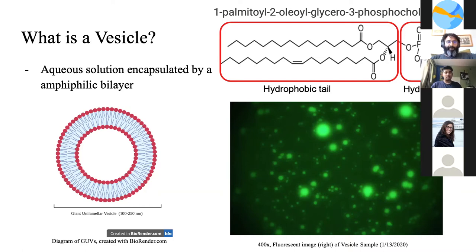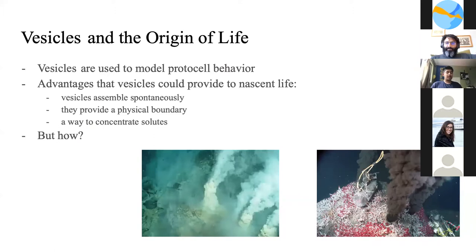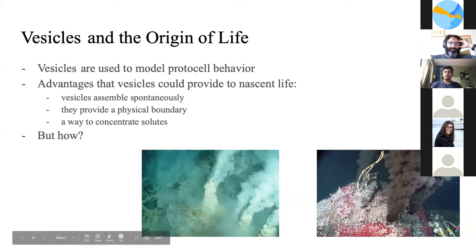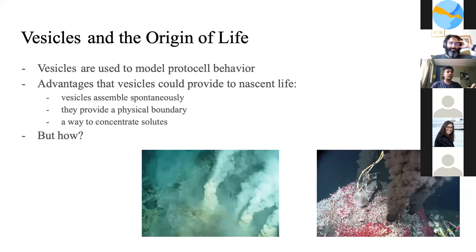For vesicles and the origin of life, we can use vesicles as models for protocells and monitor their behavior. The main reasons protocells were advantageous in the primordial world: they're able to spontaneously form, making them readily available; they provided a semi-permeable membrane allowing control of nutrient uptake and waste secretion; and they're able to concentrate solutes and create gradients between the outer and inner world, which is important for things like respiration.